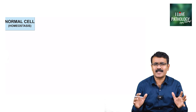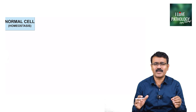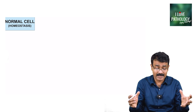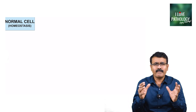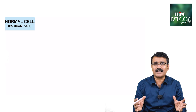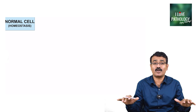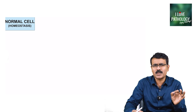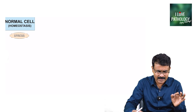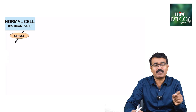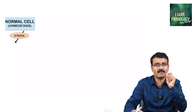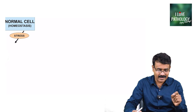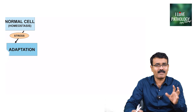Before we talk about integrated stress response, we will talk about what really happens in the normal cell. We all know that a normal cell stays in an equilibrium state, that is called homeostasis. Whenever there is stress to this particular cell, it tries to adapt. That is the first important response — we call that cellular adaptation.